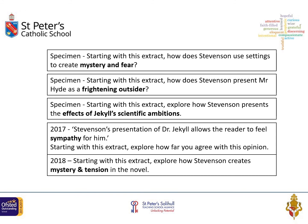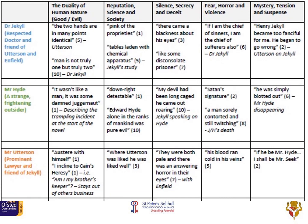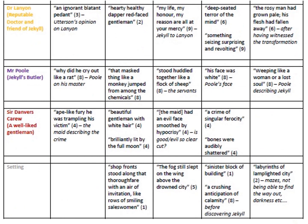Here's another slide to pause and use as part of your revision — these are key words that have come up in past exam papers. Themes include mystery, fear, frightening outsiders, the effects of ambition, sympathy, and tension. Find an appropriate extract, have a go at writing a response, and hand it to your teachers. The following slides also help you chart different themes across the whole novel and different characters — for example, duality linking to Hyde, Jekyll, and Utterson, or the idea of silence and secrecy.